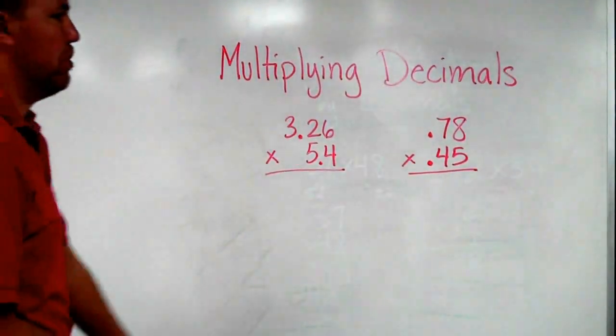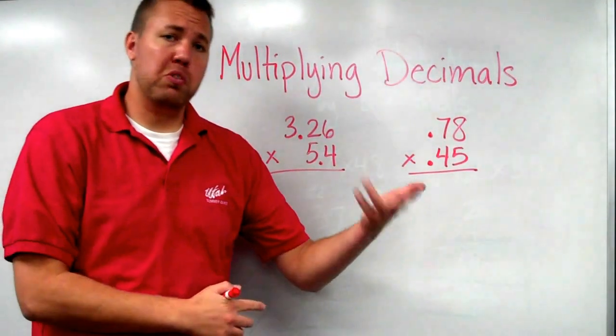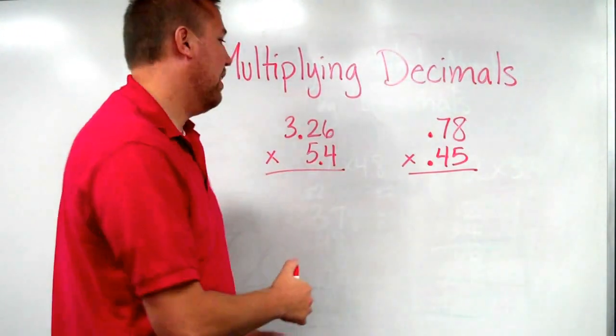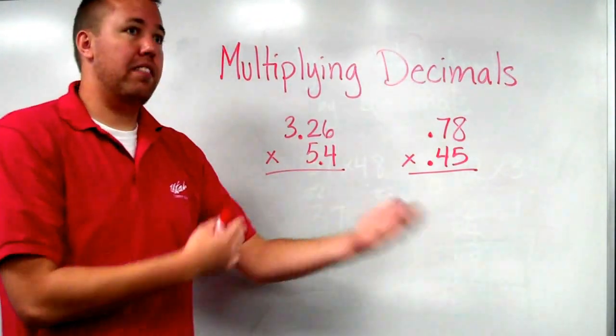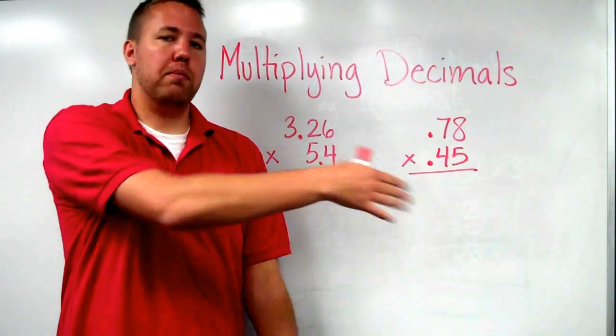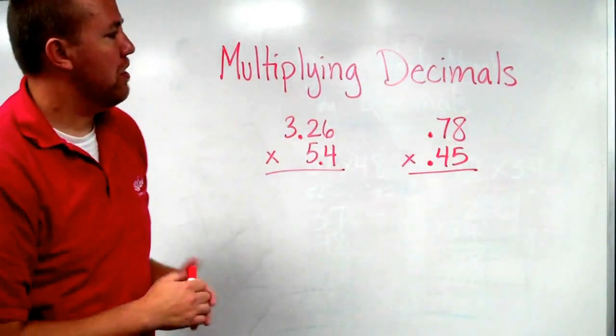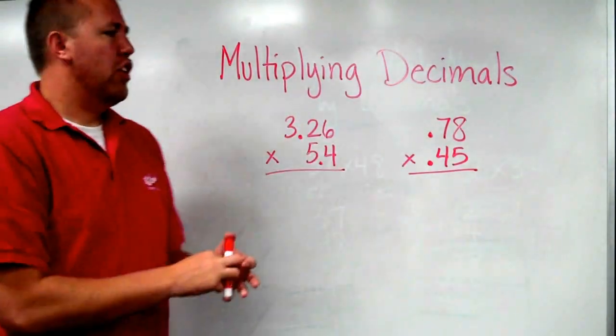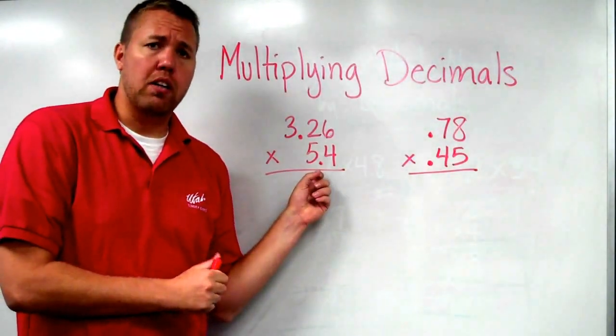Today's lesson covers multiplying decimals. When I say just multiplying decimals, each number will have a decimal point in it. If there's a number that doesn't have a decimal in it, it'll be multiplying whole numbers by decimals. Today, as we just look at multiplying decimals, you'll probably notice something in this very first one.